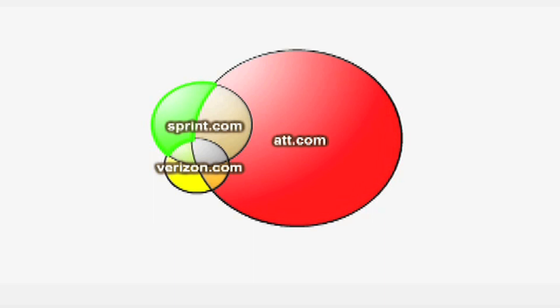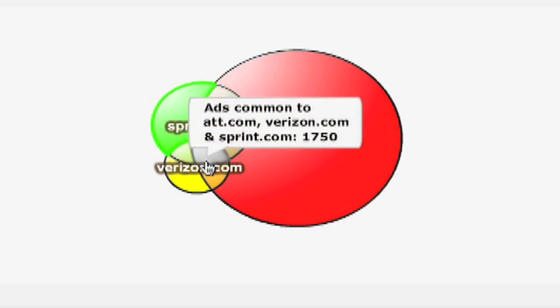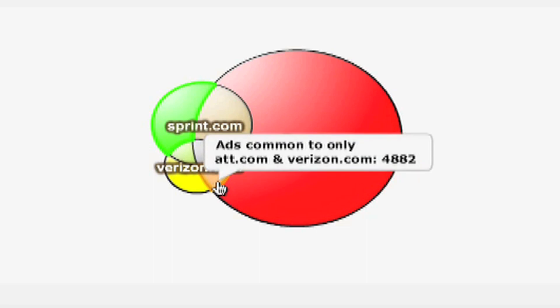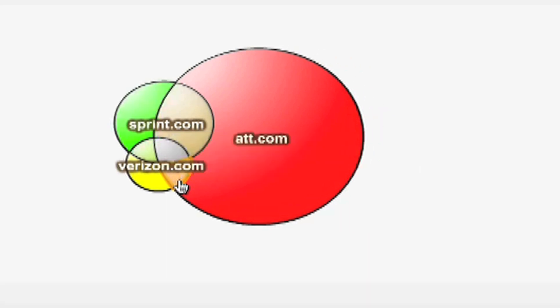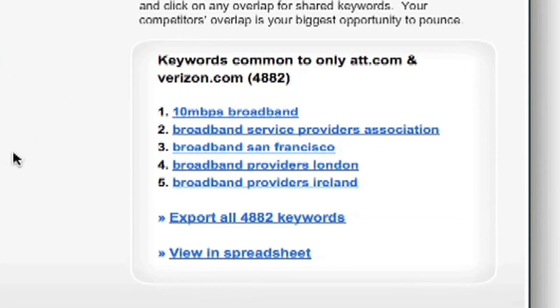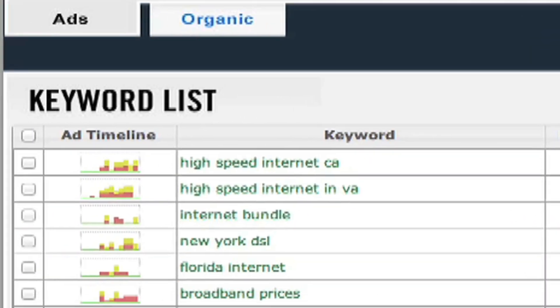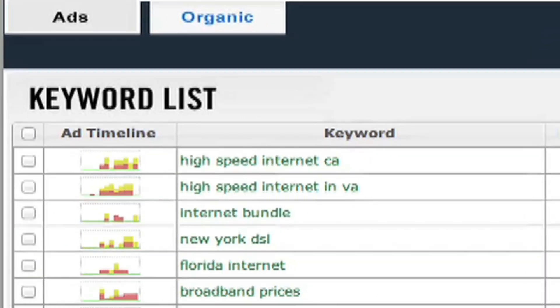This time we're not going to click in the middle section because we already have those keywords. We're going to click here in the orange section — or better said, the section where your two competitors overlap but you do not. These are keywords that your competitors have both shown up on in the last year, but you have not. When we get a more detailed look at this list, we notice that there is no green in the ad timeline, which of course means no Sprint. So when you select keywords in this section, there is no risk of double bidding.